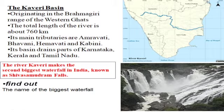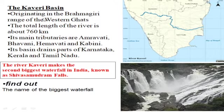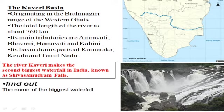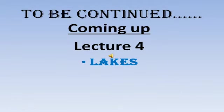Kaveri originates from Brahmagiri Hills, Karnataka. Its total length is 760 km. Main tributaries are Amravati, Bhavani, Hemavati, and Kabini. The basin drains Karnataka, Kerala, and Tamil Nadu. An important feature of Kaveri is that it creates India's second biggest waterfall — Shivasamudram. The first biggest waterfall is your homework to find out!